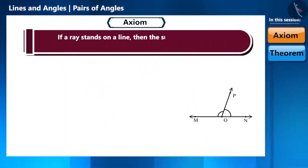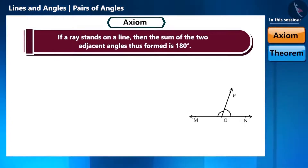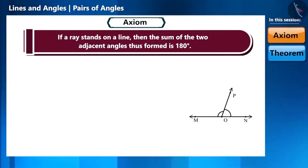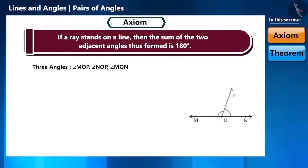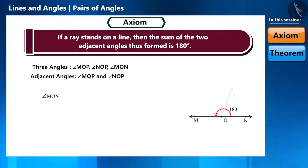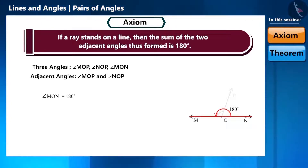If a ray stands on a line, then the sum of the two adjacent angles thus formed is 180 degrees. If you observe the figure, there are three angles here. Can you tell the names of the three angles? Angle MOP, angle NOP, and angle MON. Angle MOP and angle NOP are adjacent angles. The measure of angle MON is 180 degrees, since MON is a straight line and a straight line always makes an angle of 180 degrees.